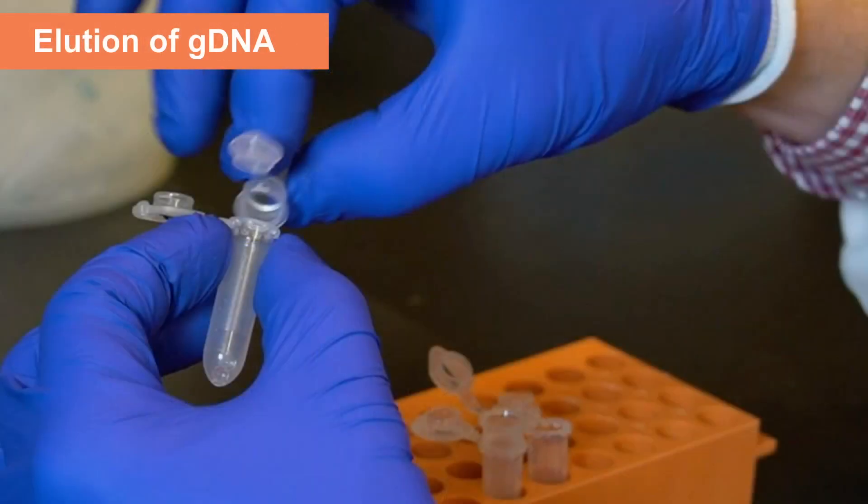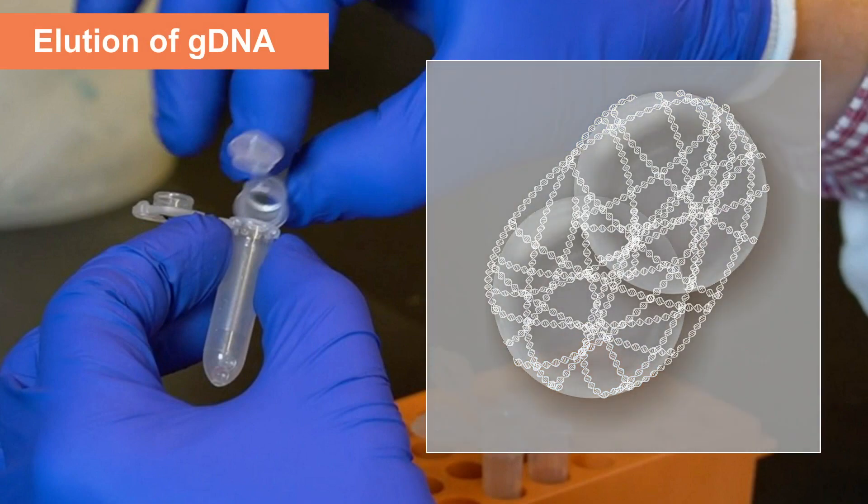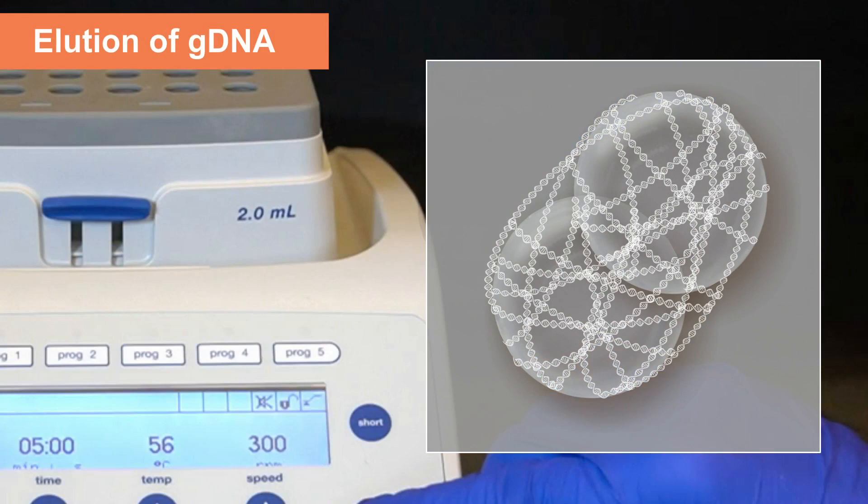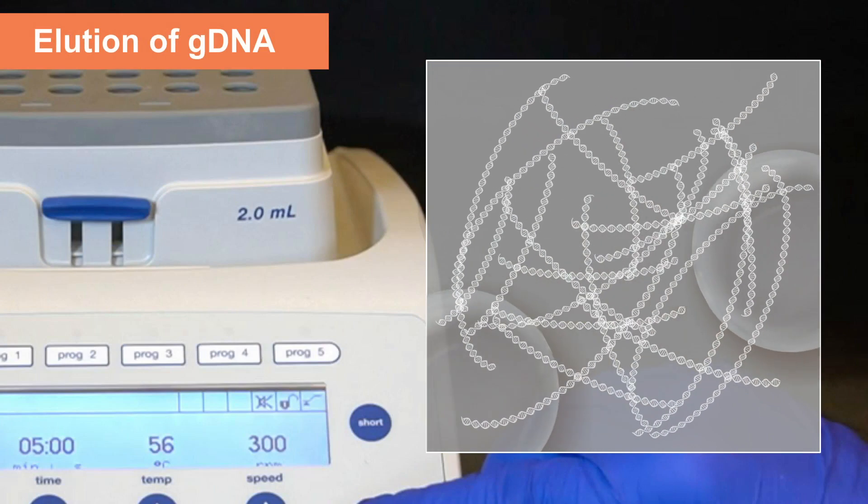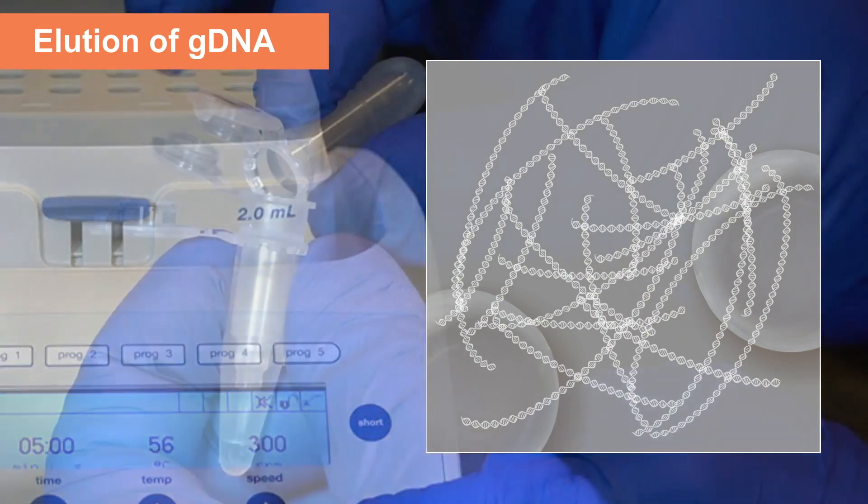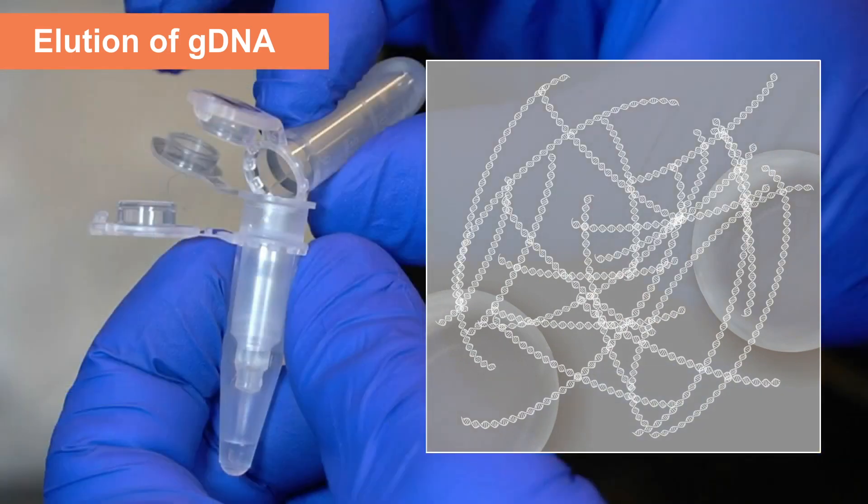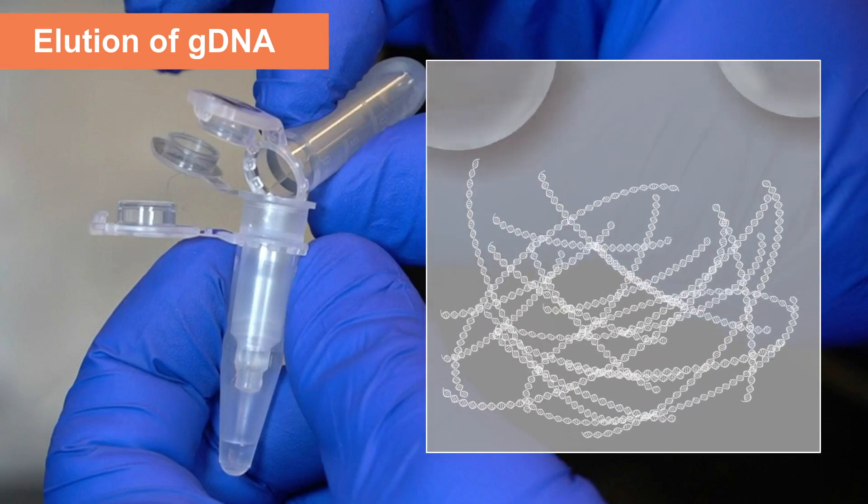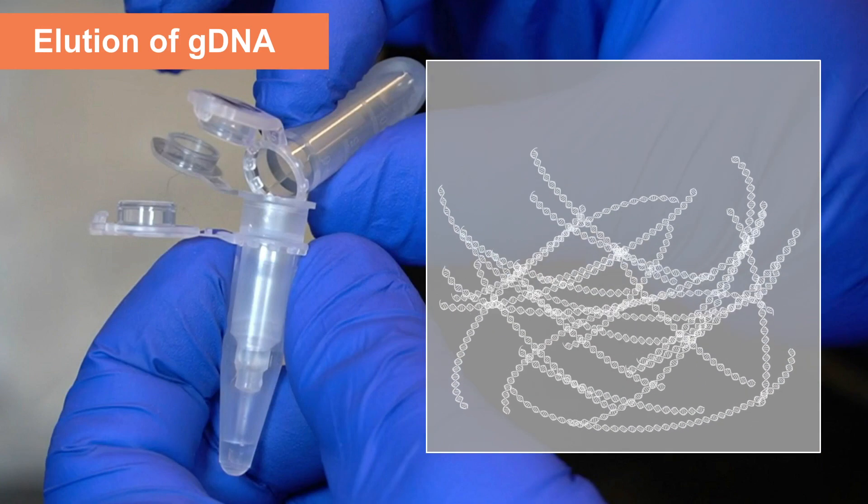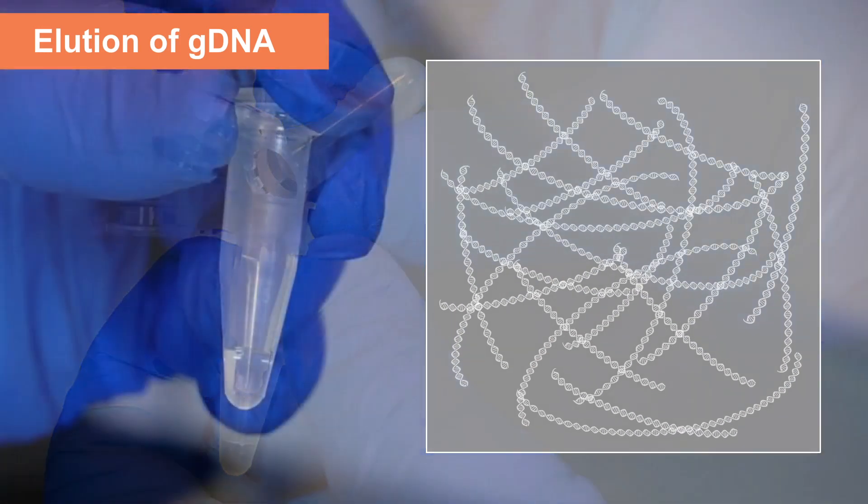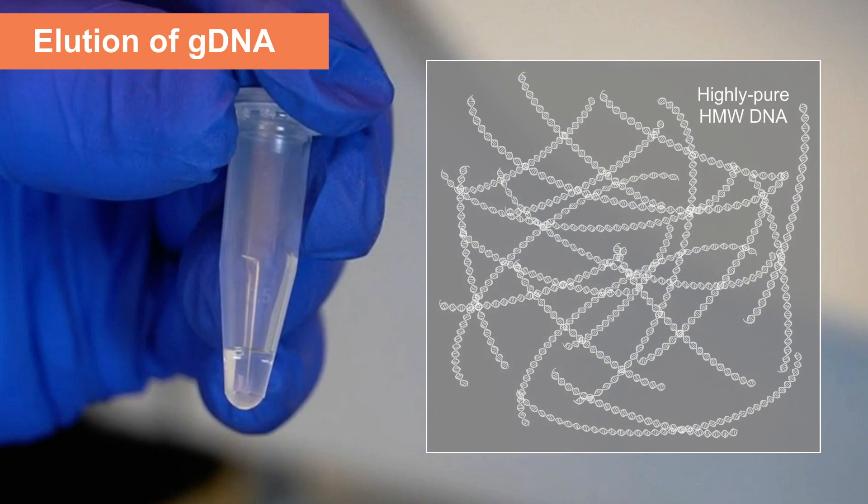The beads can then be transferred to a new tube and mixed with elution buffer to begin the elution process. After a few minutes of incubation at 56 degrees Celsius, the DNA slides off of the smooth surface of the glass beads. The bead retainer is then used again to facilitate the separation of the glass beads from the DNA with a quick and efficient spin, leaving the user with highly pure, high molecular weight DNA.